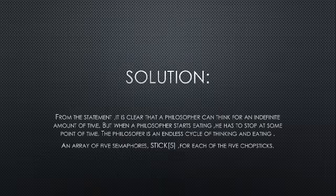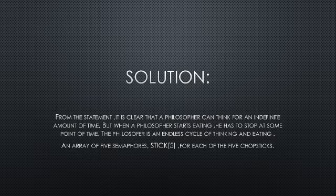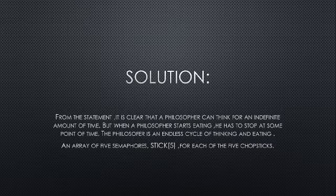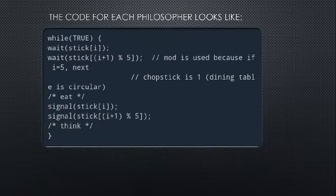From the problem statement, it is clear that a philosopher can think for an indefinite amount of time. But when a philosopher starts eating, he must stop at some point. The philosopher is in an endless cycle of thinking and eating. An array of five semaphores, defined as stick of size 5, is used for each of the five chopsticks.